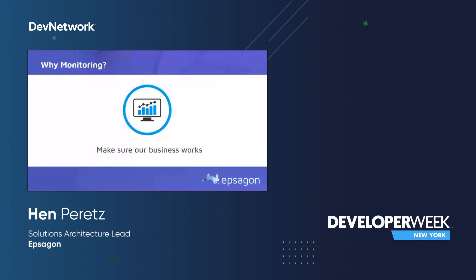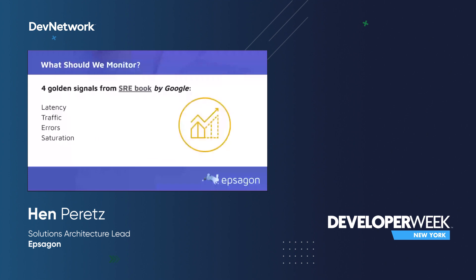Google has laid this down in what's called an SRE book — I can share the link afterward — but they basically narrow it down into what are called the four golden signals. The first one is latency. By monitoring latency, I can look at my service response time over time, and that alone can give me information about whether that service is working properly.